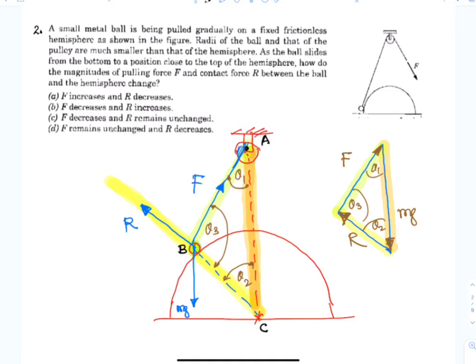So the triangle ABC and the vector triangle shown above are similar.